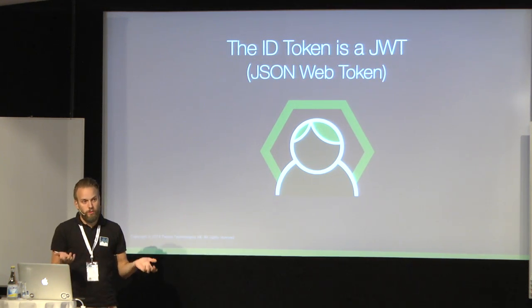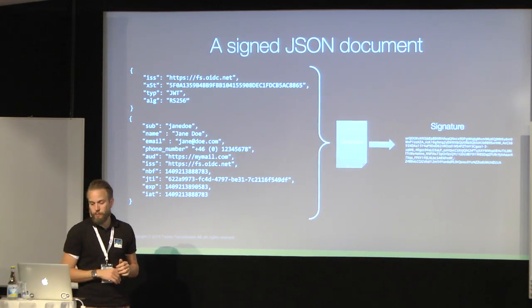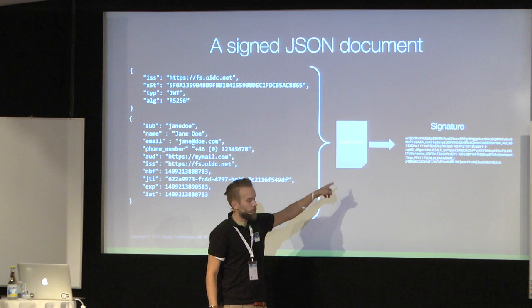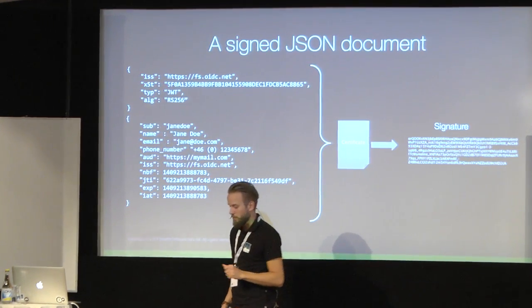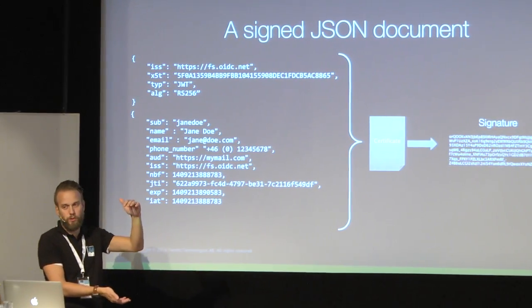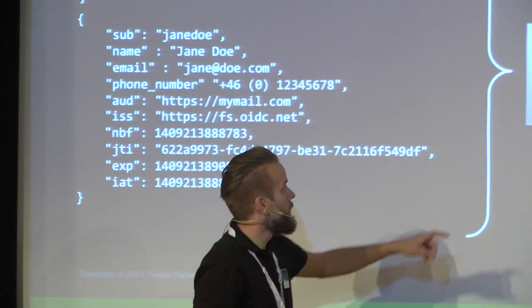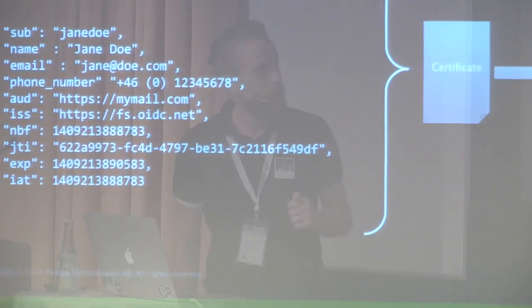The JSON Web Token is a JSON document - actually many JSON documents - compiled together, encoded, and then signed. You have a header, you have a body, both are JSON. You take a private key and sign this document to get a signature that you append to the message - that's your JWT. It's not necessarily encrypted, so you could easily read it. But all your clients can take the public part of this, validate the signature, and know that the authorization server actually did sign and issue this authentication session - and create their own sessions based on that trust.